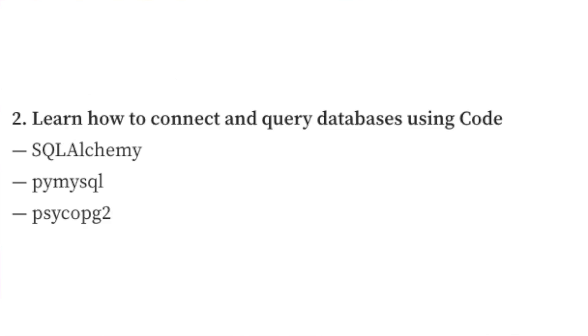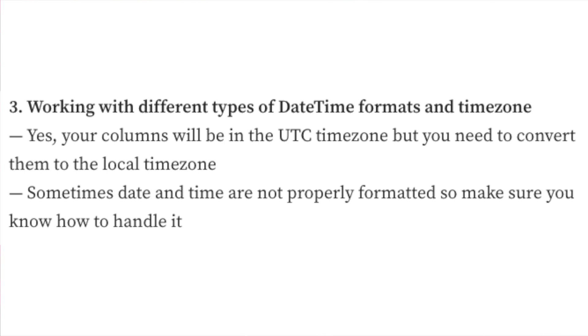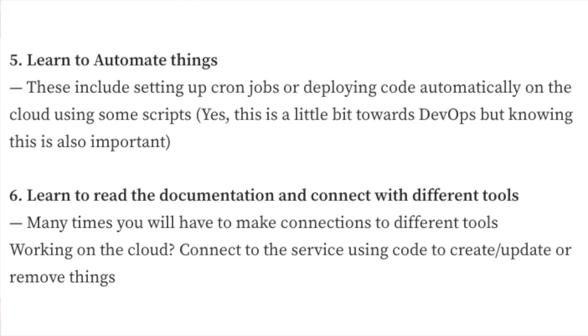Second, learn how to connect and query databases using code — learning about SQLAlchemy, PyMySQL, Psycopg2. Third, learn about different datetime formats and time zones. Fourth, learn how to write data transformation jobs — use Pandas to learn how to manipulate data, drop columns, combine multiple DataFrames, and apply logic on top of it. Fifth, learn how to automate the entire thing. And sixth, learn how to read documentation and connect with different tools.